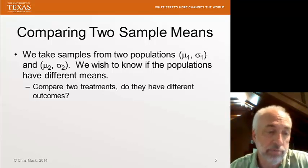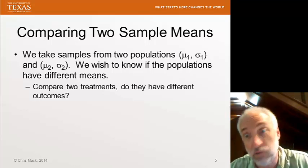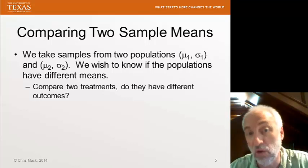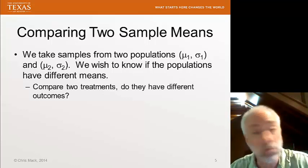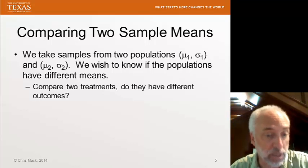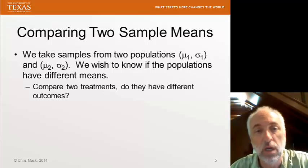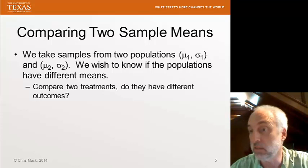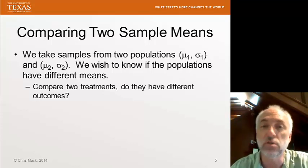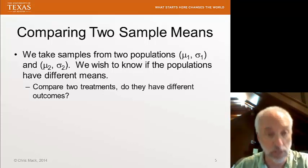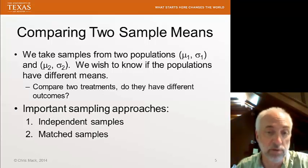For example, I might test a drug compared to a placebo. And do the populations of outcomes, patient outcomes, differ between those two? I might have two different processes for making a device, and I want to know is the yield better for one process versus the other. So I have two samples and I want to compare their means.